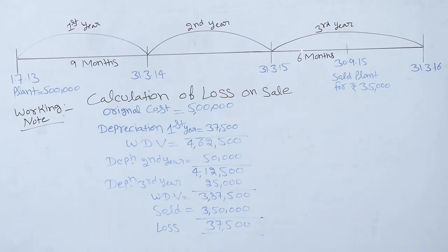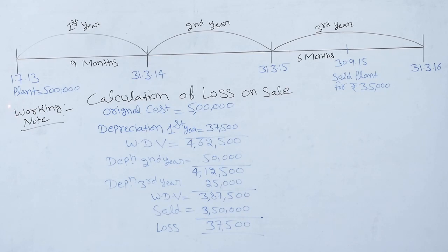This is the timeline, consisting of 3 years. ABC Ltd on 1st July 2013 purchased a plant for Rs 4,70,000 and spent Rs 30,000 on its repair, so the total plant cost will be Rs 5,00,000. We will charge depreciation from 1st July 2013 to 31st March 2014, that is for a period of 9 months.